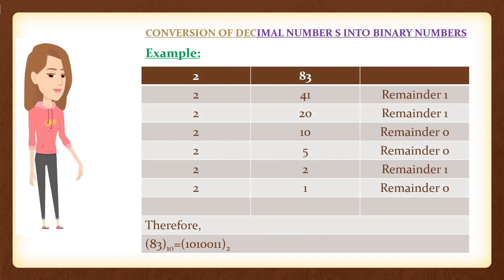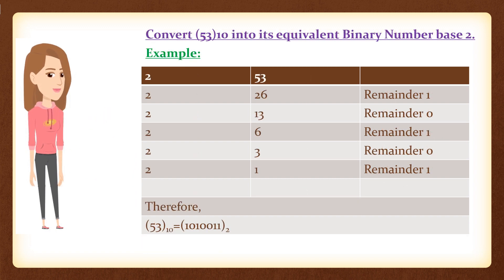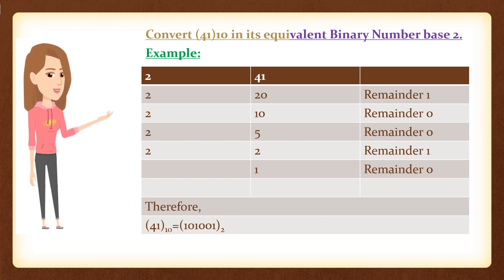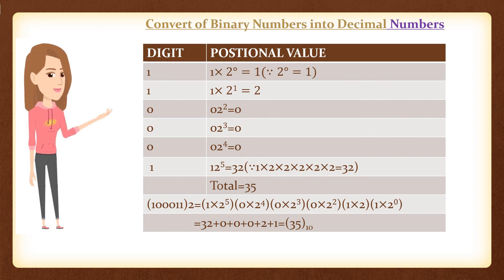Conversion of decimal numbers into binary numbers. Example: Convert 53₁₀ into its equivalent binary number (base 2). Convert 41₁₀ into its equivalent binary number (base 2). Conversion of binary numbers into decimal numbers.